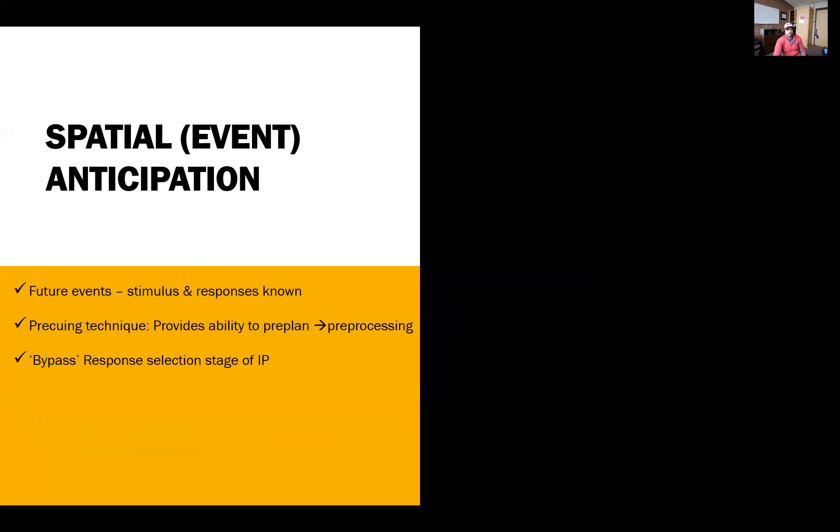Now we'll talk about spatial event anticipation. When we talk about spatial anticipation, there's a stimulus and response known for future events. Pre-cueing techniques are used mostly in studies to hinder, prevent, or catch anticipation. Think back to the 100-meter sprint: on your marks, get set—those are all pre-cues leading up to the individual stimulus. This often allows us to do a little pre-processing.